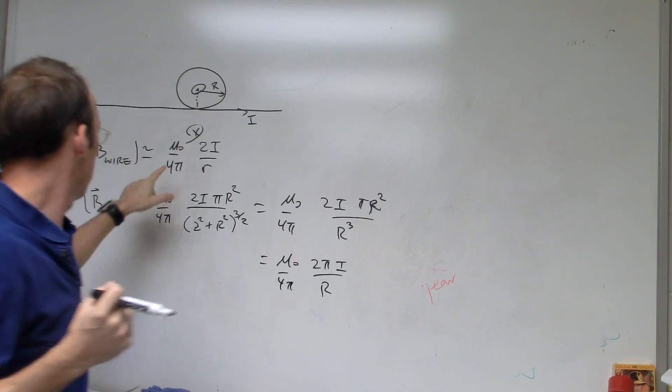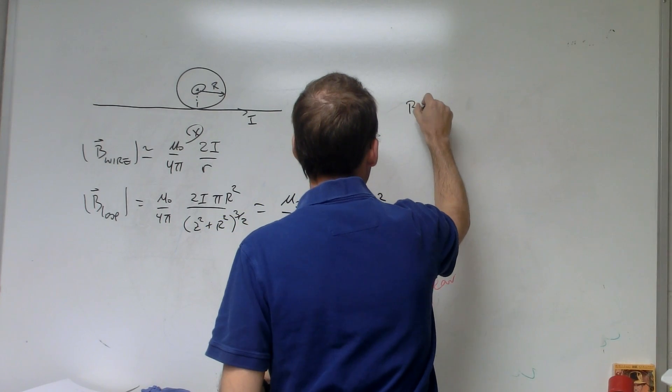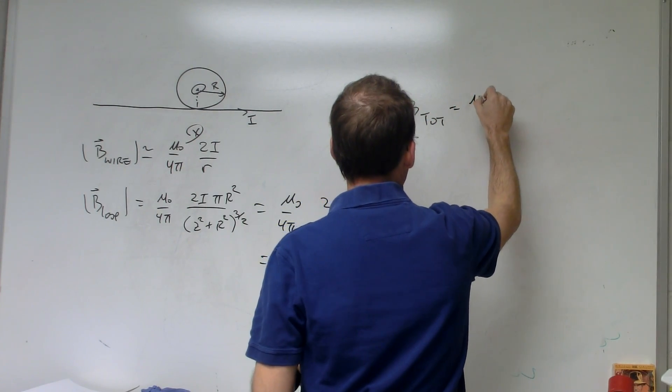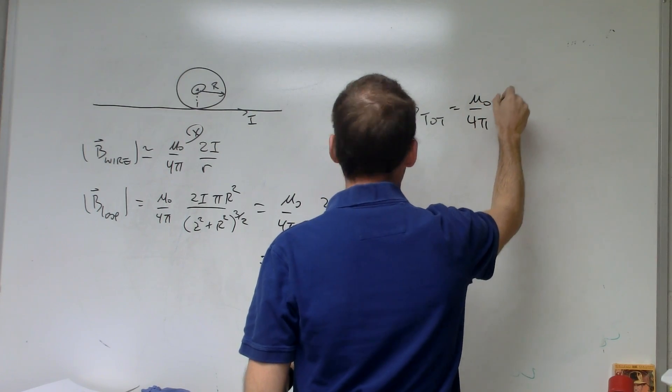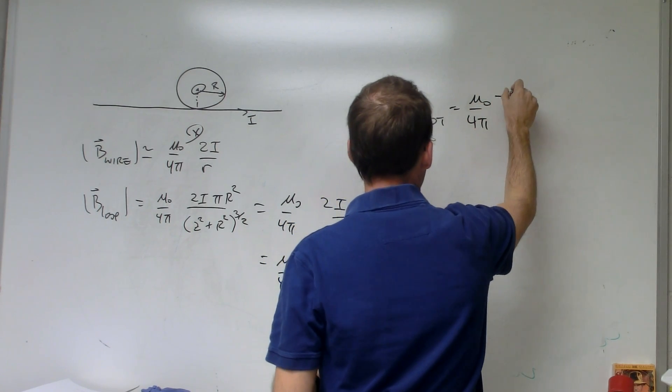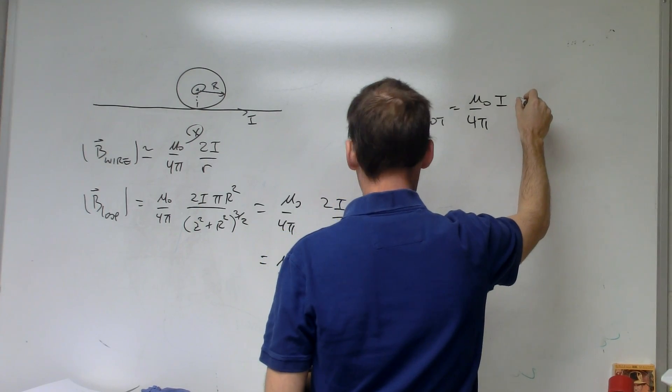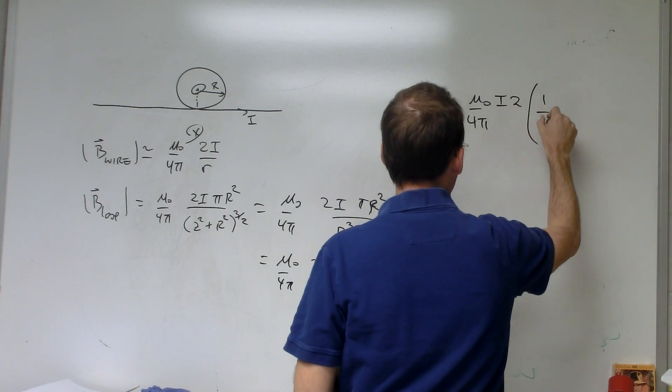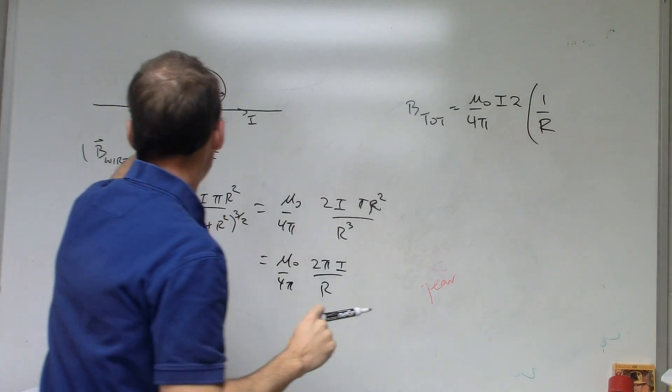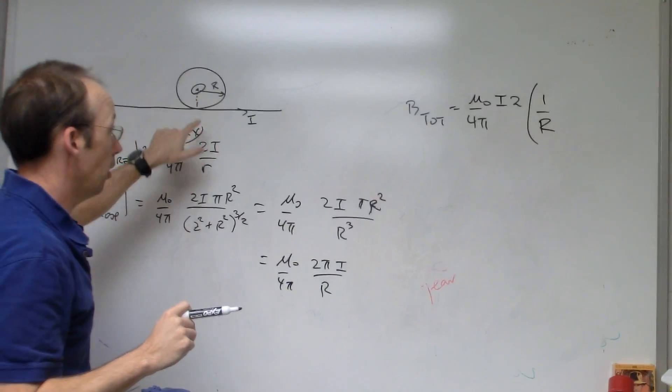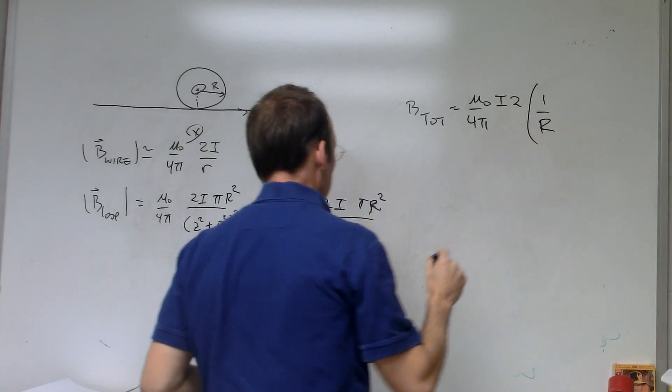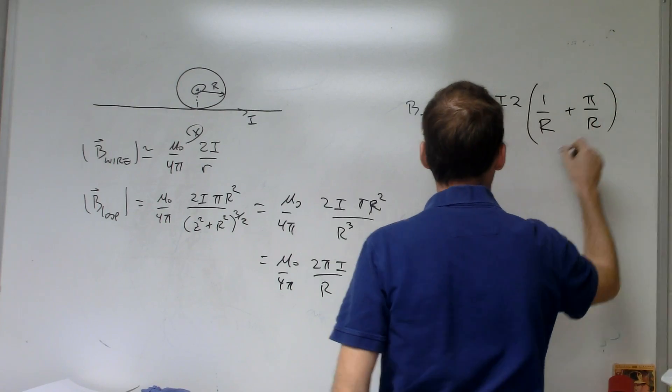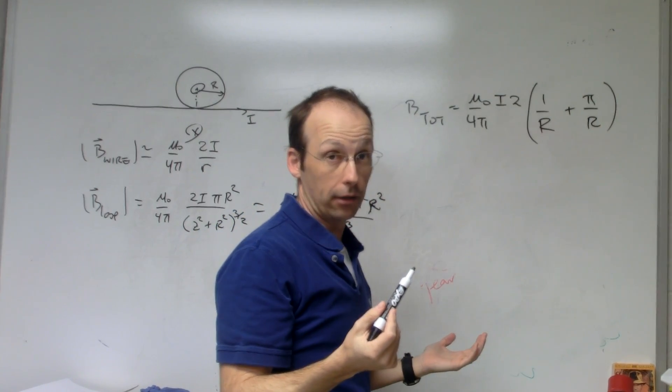All I'll do is put things in right now. So B total, the magnitude, it's going to be mu naught over 4 pi. They both have that, they both have i, they both have a 2, times 1 over r, because that's the distance from the wire is big r. And then here I have pi over r.